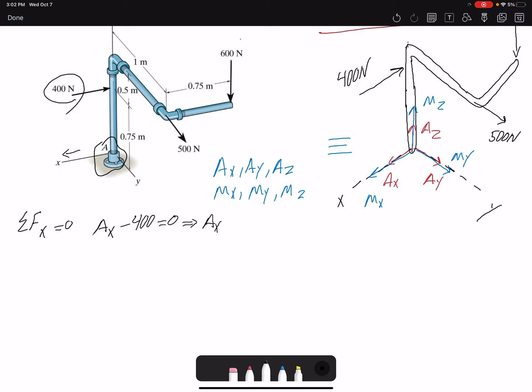Summation of forces in Y equals zero: AY plus 500, that's positive Y, equals zero, therefore AY equals negative 500 newtons.